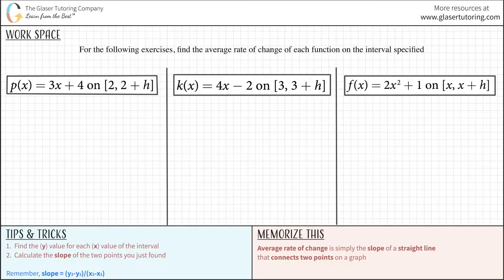For the following exercises, find the average rate of change of each function on the interval specified. All right, so just remember that average rate of change down here is simply the slope of a straight line that connects two points on a graph.